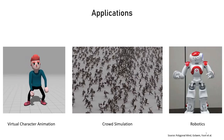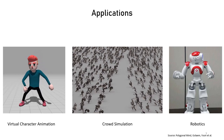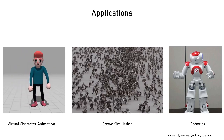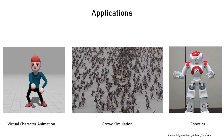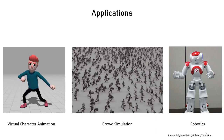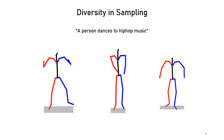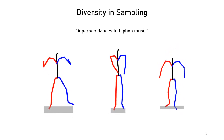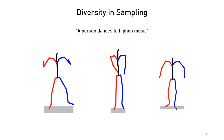Conditional human motion synthesis has been an actively researched problem recently. It has various applications in virtual character animation and crowd simulation in computer games, movie production, and robotics. Its main goal is to synthesize diverse motion that is kinematically and physically plausible and faithful to the conditioning input.